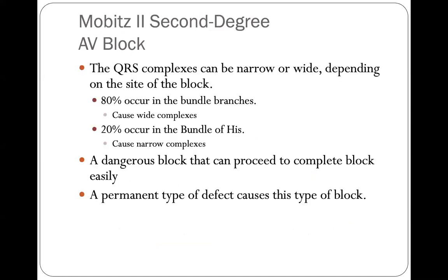The QRS complexes in Mobitz II can be narrow or wide. About 80% of Mobitz II blocks occur in the bundle branches, producing wide QRS complexes; about 20% occur in the bundle of His, causing narrow complexes. Mobitz II is always bad — a second degree type two is always clinically significant. The concern is that it can easily progress to complete heart block. Most of the time it is caused by a permanent pathological defect.